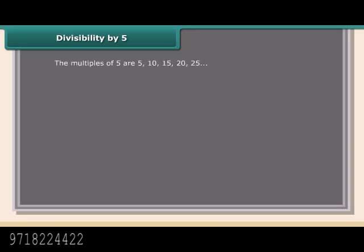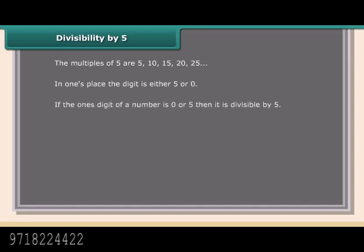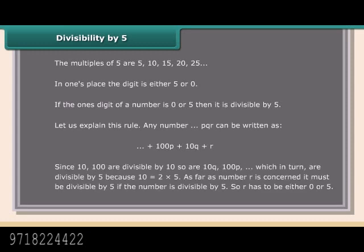Divisibility by 5: the multiples of 5 are 5, 10, 15, 20, 25, and so on — in the ones place the digit is either 5 or 0. If the ones digit of a number is 0 or 5, then it is divisible by 5. For any number PQR = 100P + 10Q + R, since 10 and 100 are divisible by 5 (because 10 = 2×5), the digit R must be either 0 or 5.